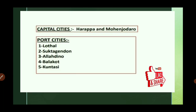The capital cities of the Indus Valley Civilization are Harappa and Mohenjo-daro. There were five port cities in the Indus Valley Civilization: Lothal, Sutkagen-dor, Allahdino, Balakot, and Kuntasi.